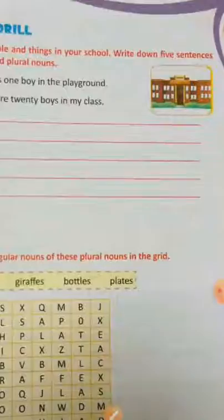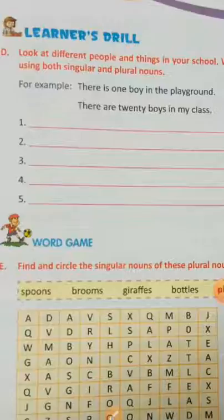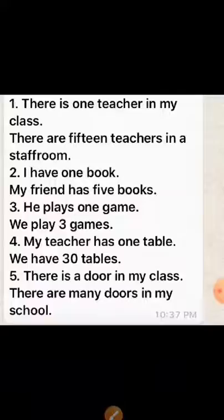In Exercise D, look at different people and things in your school and write down five sentences using both singular and plural nouns. The first one is already done as an example: there is one boy in the playground, and the plural form is there are twenty boys in the class. I have written five examples: there is one teacher in my class / there are 15 teachers in the staff room; I have one book / my friend has five books; he plays one game / we play three games; my teacher has one table / we have 30 tables; there is a door in my class / there are many doors in my school.